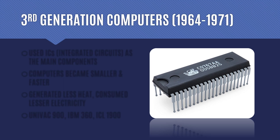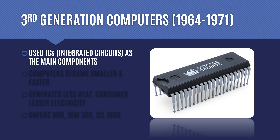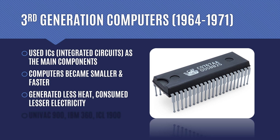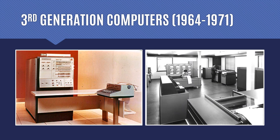The third generation computers covered the timeline 1964 to 1971. These computers used ICs — integrated circuits — as their main components. With each generation the technology kept progressing, leading to computers being smaller and faster, generating less heat and consuming less electricity compared to the second generation. Examples include UNIVAC 9000, IBM 360, and ICL 1900. You can observe from the pictures that computers were getting smaller, more efficient and faster.